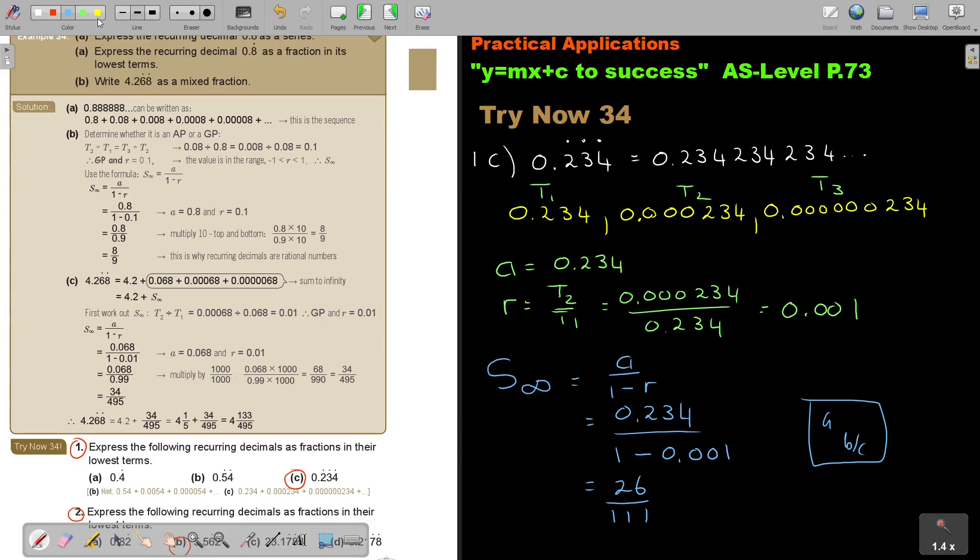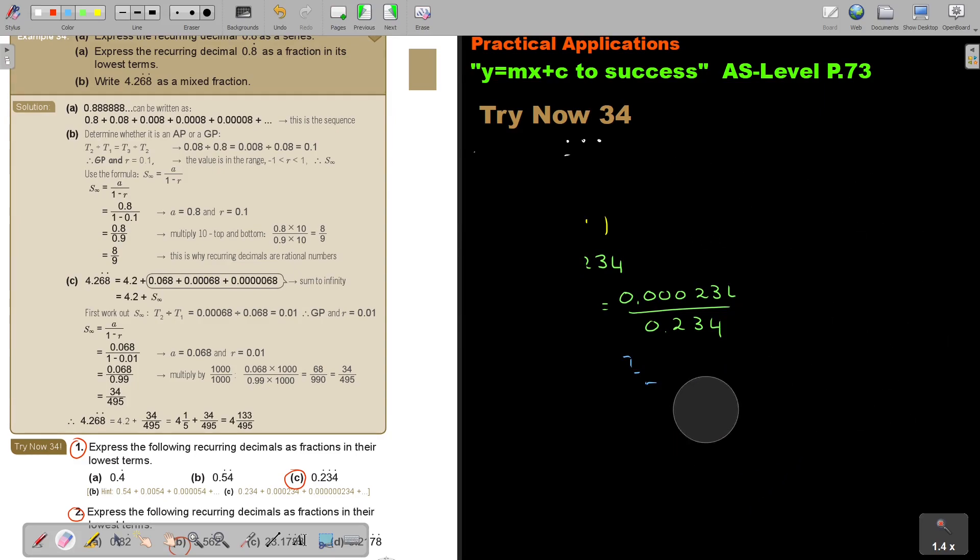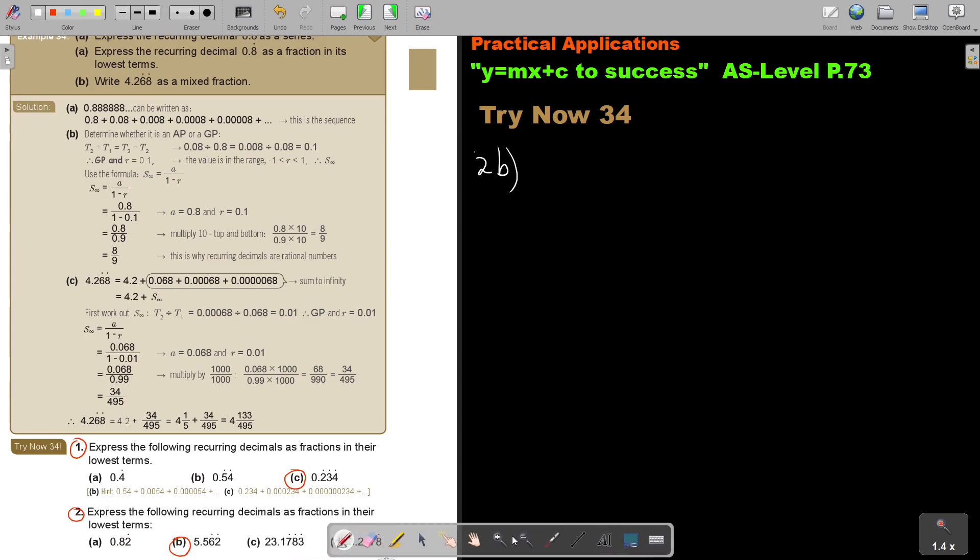And then we do the next one. Number 2B. And if I write this one now, the 5.5, that is very important, it's not recurring. So it's almost like I can say 5.5 plus, and now starts my sequence. So it's put zeros and then 62. Plus put just zeros in that place. So it's 1, 2, 3, 4 zeros.